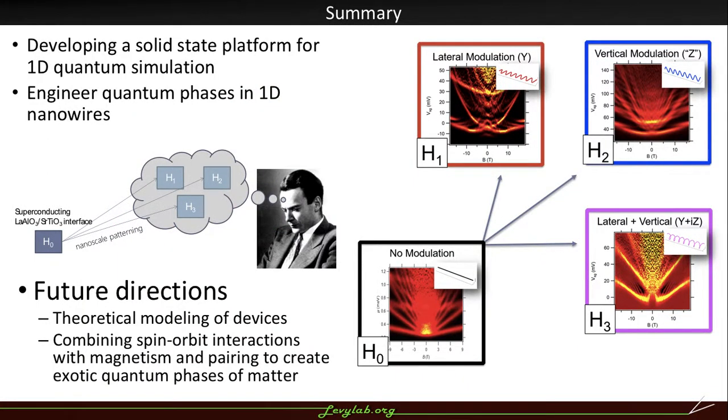In summary, we've begun developing this solid state platform for one dimensional quantum simulation and engineering quantum phases in one dimensional nanowires by adding this helical modulation to a one dimensional wire. And the future directions are trying to develop a theoretical modeling of the devices and then combining this engineered spin orbit interaction with the natural magnetism and pairing at the interface to create exotic quantum phases of matter.